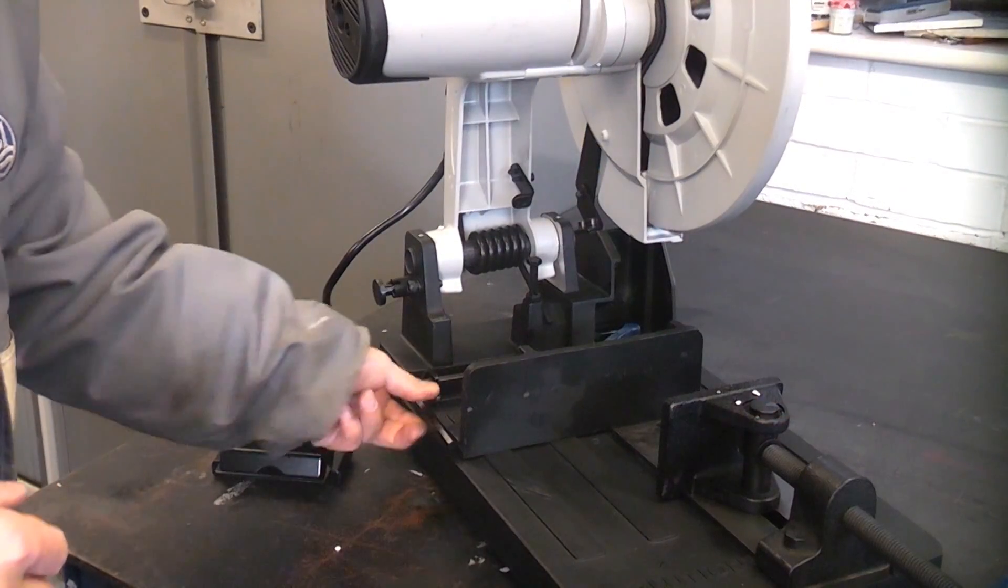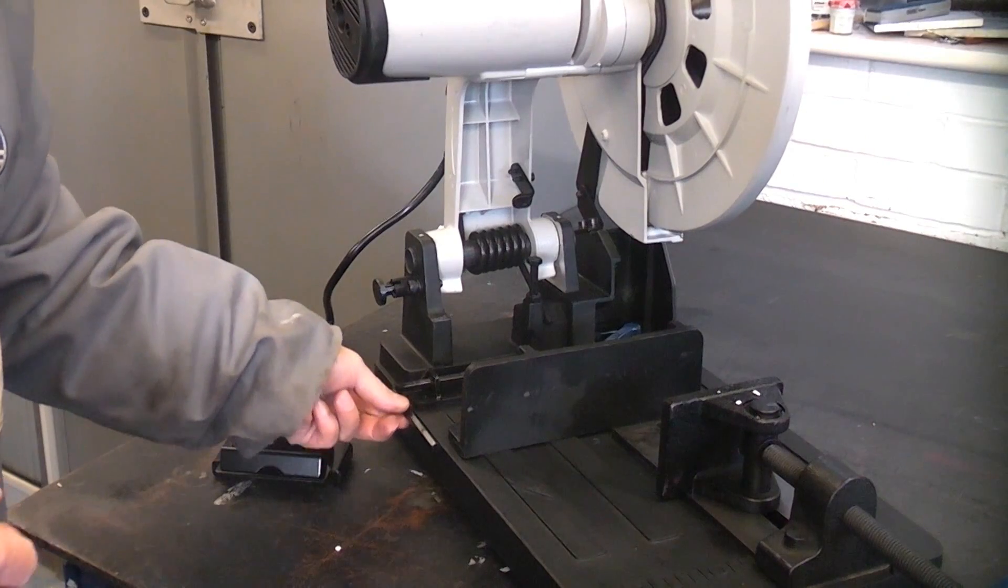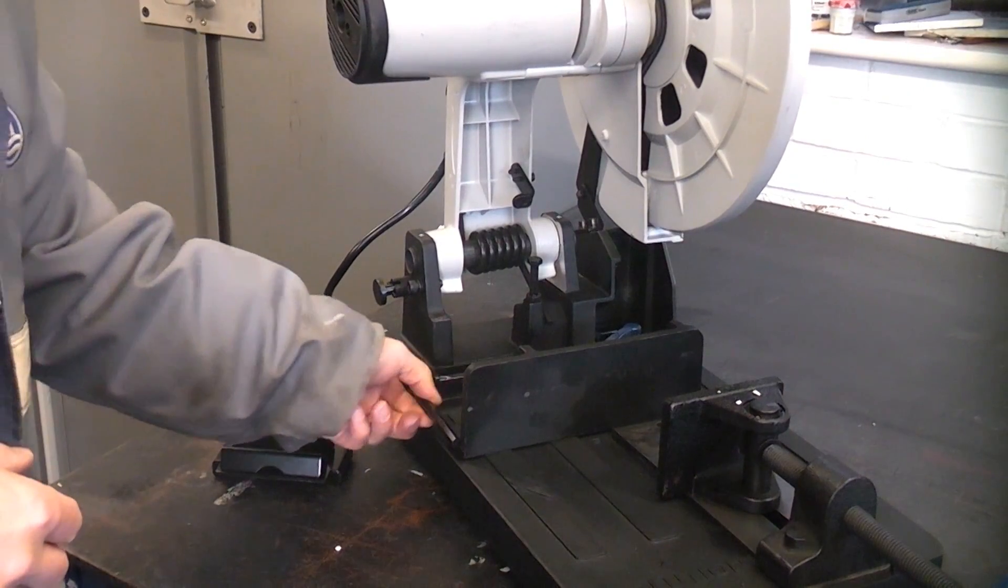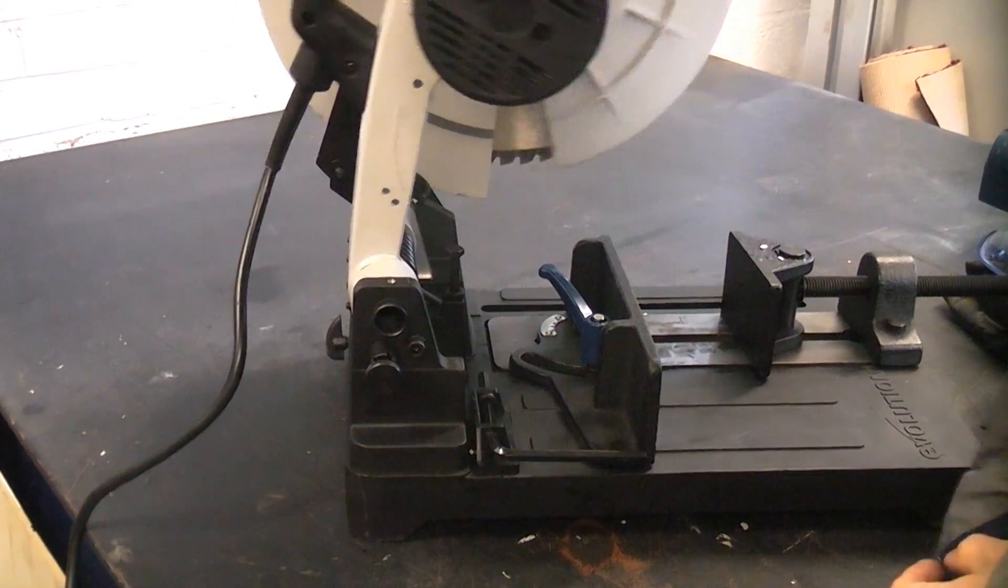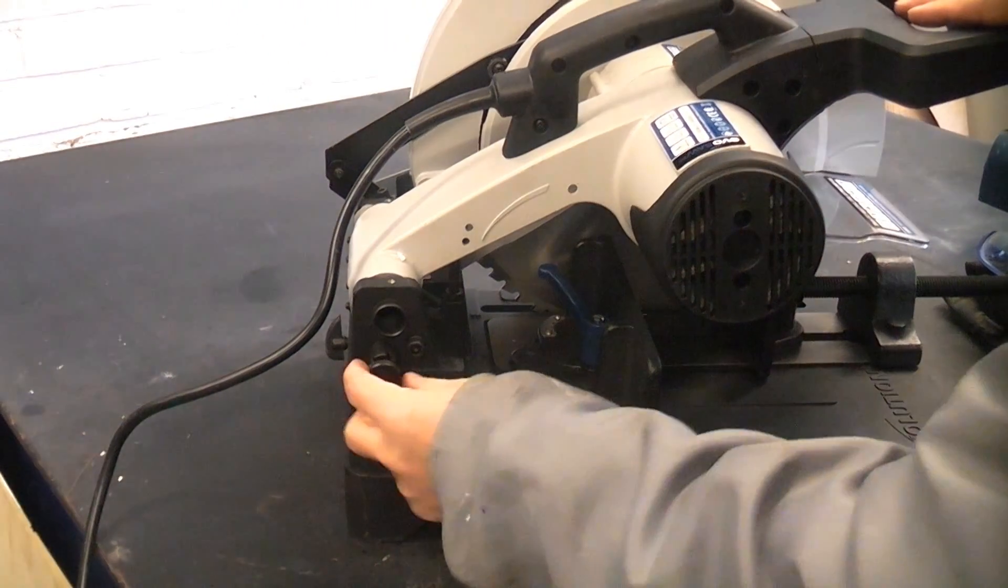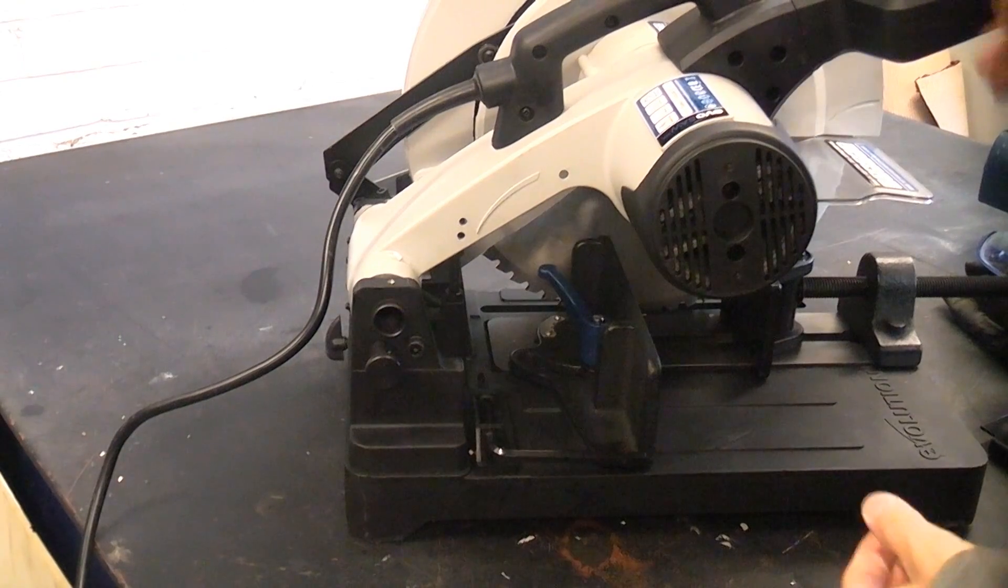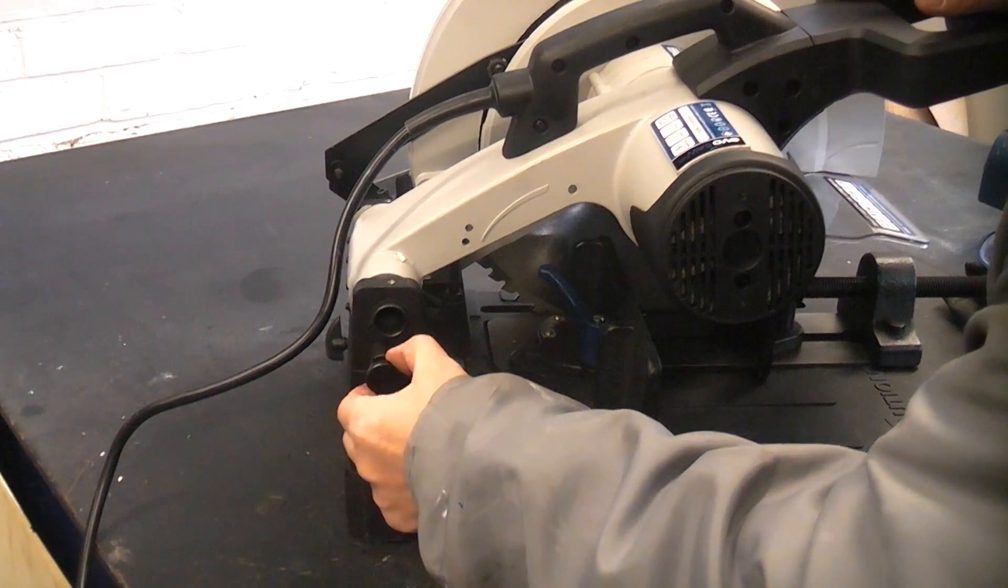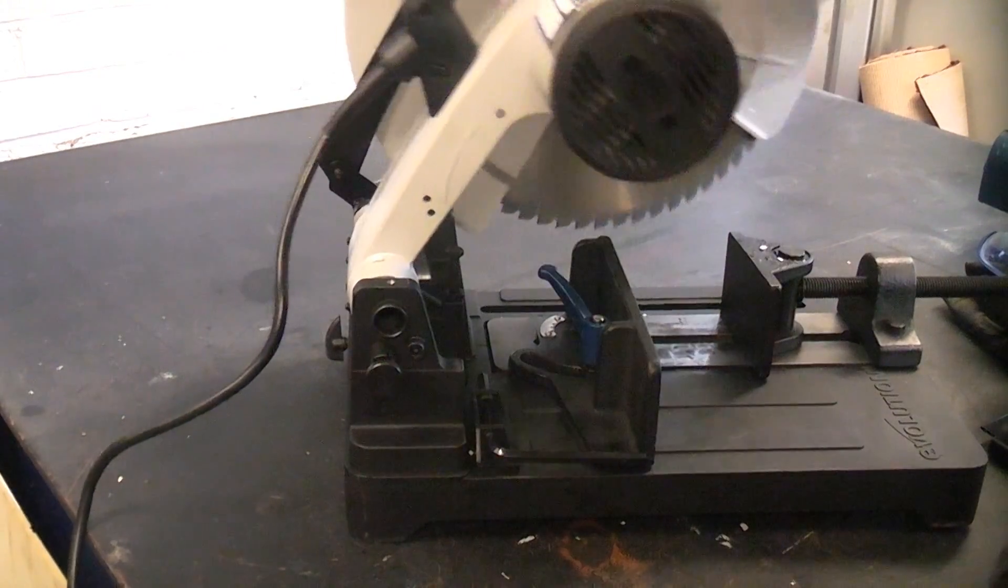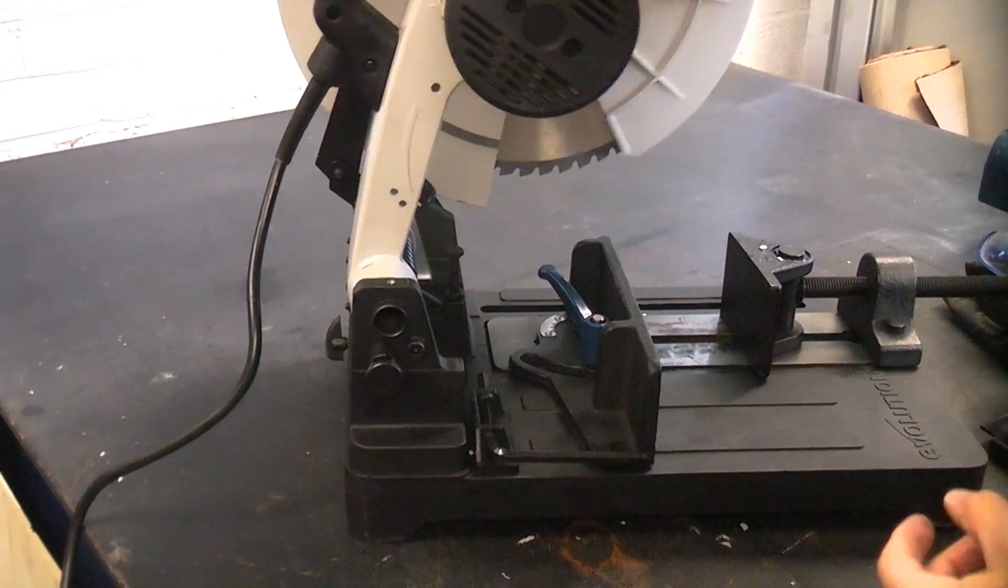On this side of the machine we have a convenient place to store the hex key for changing the blade. There's also a lock down pin on this side of the machine. If you need to transport the machine you can simply press that in and that will hold the machine in the down position. If you're not using that simply pull it out and turn it. That will enable you to use the machine in the full range of motion.